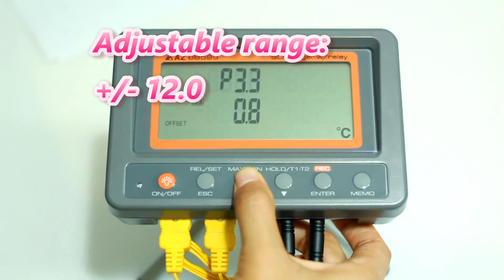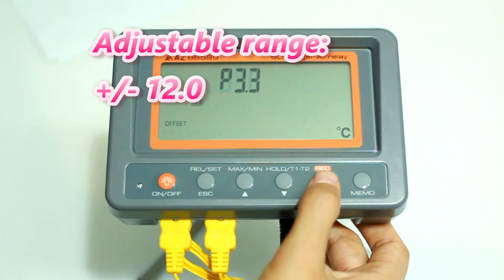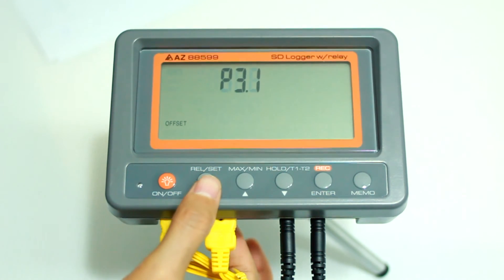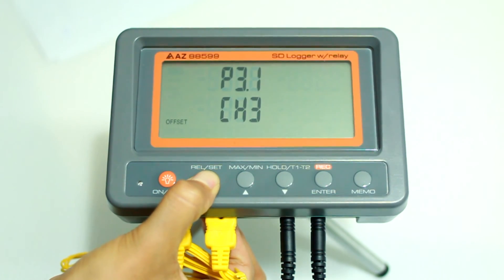The adjustable range is minus 12 degrees Celsius to plus 12 degrees Celsius. After setting, press ESC key for 2 seconds to return to normal display.